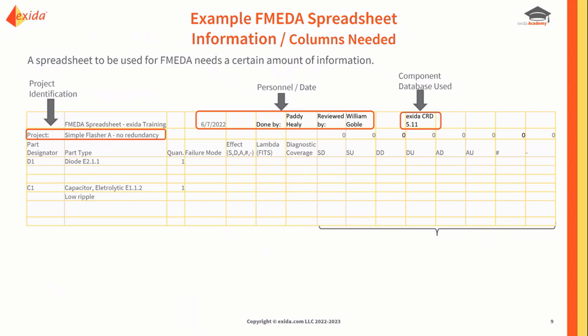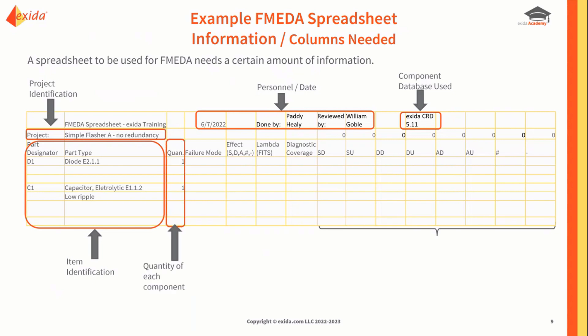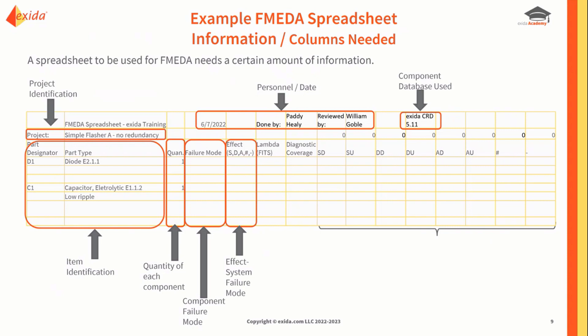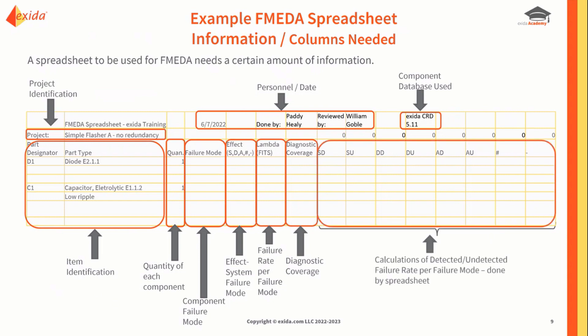Then we get into the meat of it: we identify the component, the quantity of each, the component failure modes, the effect in terms of functional safety failure modes, the failure rate for each failure mode listed, and the diagnostic coverage for each specific component failure mode. We use that raw information to calculate the various failure rate categories for our functional safety verification.